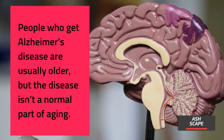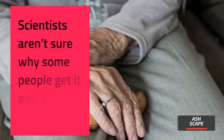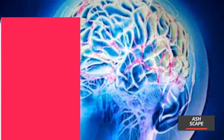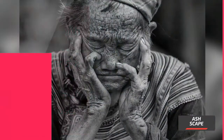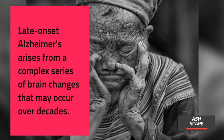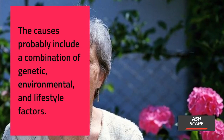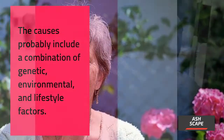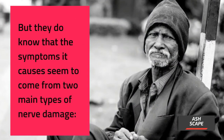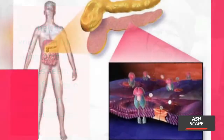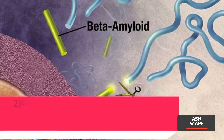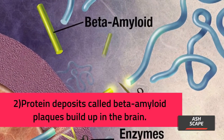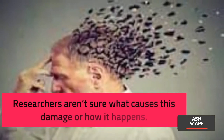People who get Alzheimer's disease are usually older, but the disease isn't a normal part of aging. In people with early onset Alzheimer's, a genetic mutation may be the cause. Late-onset Alzheimer's arises from a complex series of brain changes that may occur over decades, involving a combination of genetic, environmental, and lifestyle factors. The symptoms come from two main types of nerve damage: (1) nerve cells develop neurofibrillary tangles, and (2) protein deposits called beta-amyloid plaques build up in the brain.